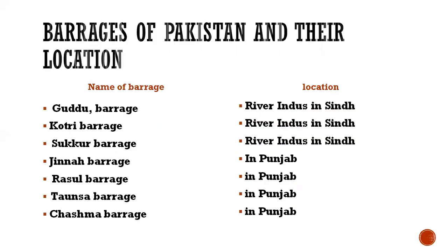Let's look at the location of the barrages of Pakistan. Guddu Barrage, Kotri Barrage, and Sukkur Barrage are on River Indus in Sindh. Whereas Jinnah Barrage, Rasul Barrage, Tonsa Barrage, and Chashma Barrage are built in Punjab.